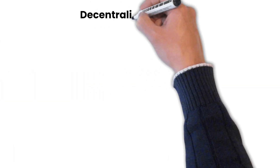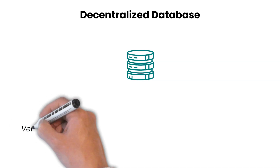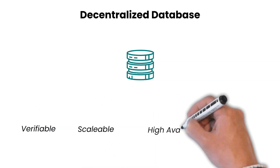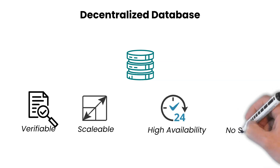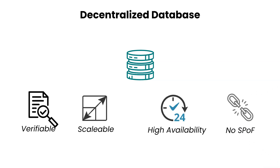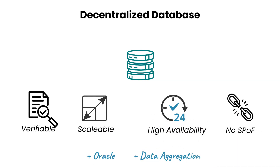Decentralized database: the Stratos decentralized database is a verifiable, scalable, high availability database with the added protection of no single point of failure architecture. With the Stratos blockchain, the database also offers the capability to power Oracle and data aggregation services for any blockchain project.